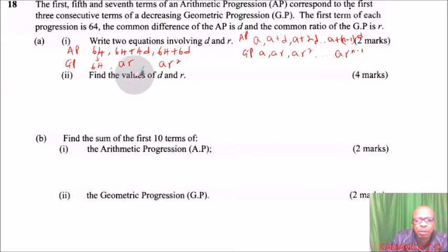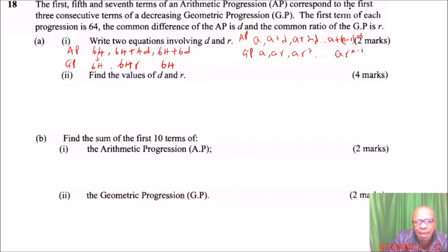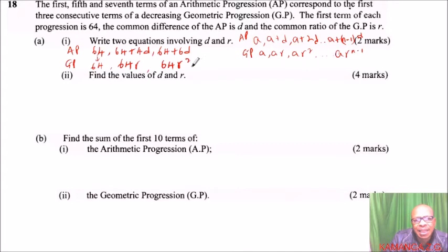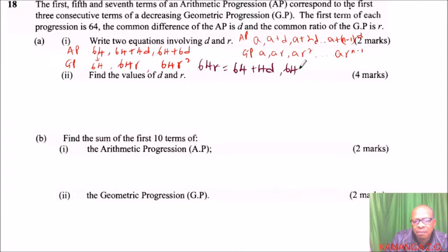We can now equate the AP terms to the GP terms. The second term gives us: 64r = 64 + 4d. The third term gives us: 64r² = 64 + 6d. These are the two equations involving d and r required in Part A, Roman numeral one — each equation earns one mark.